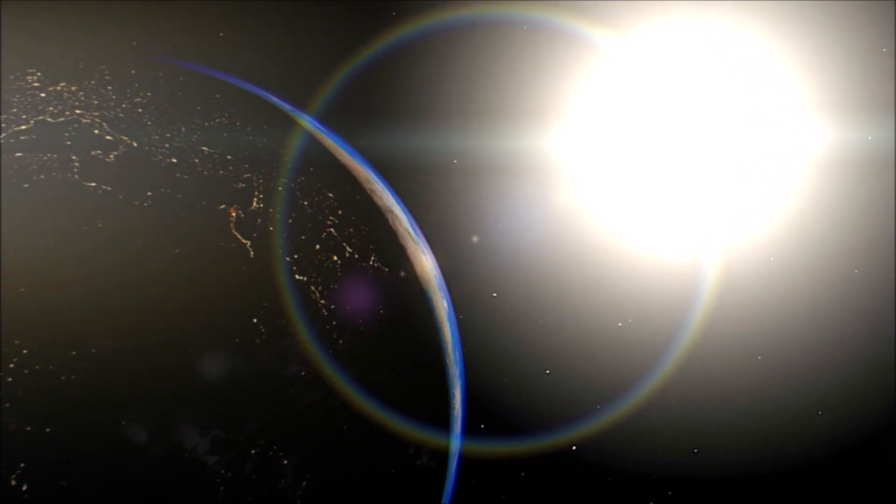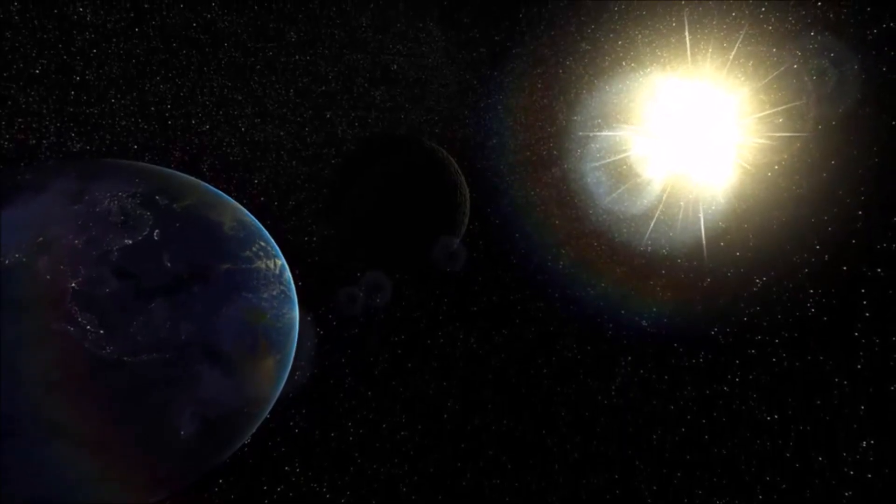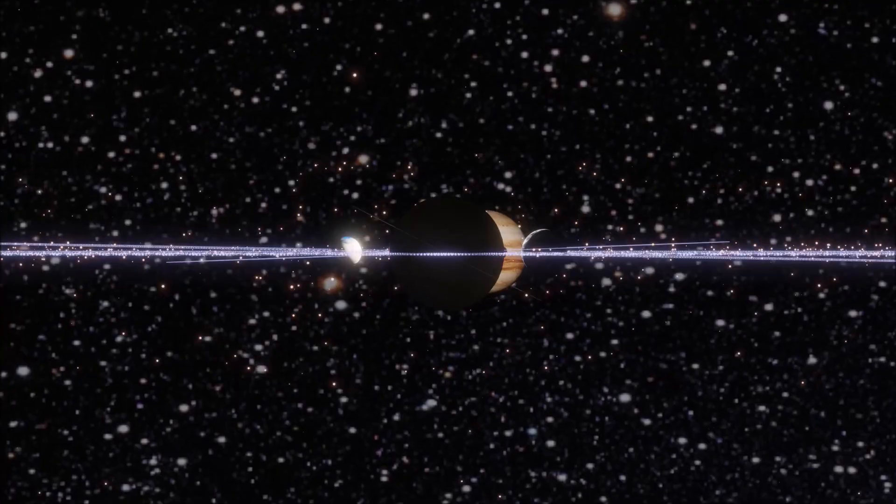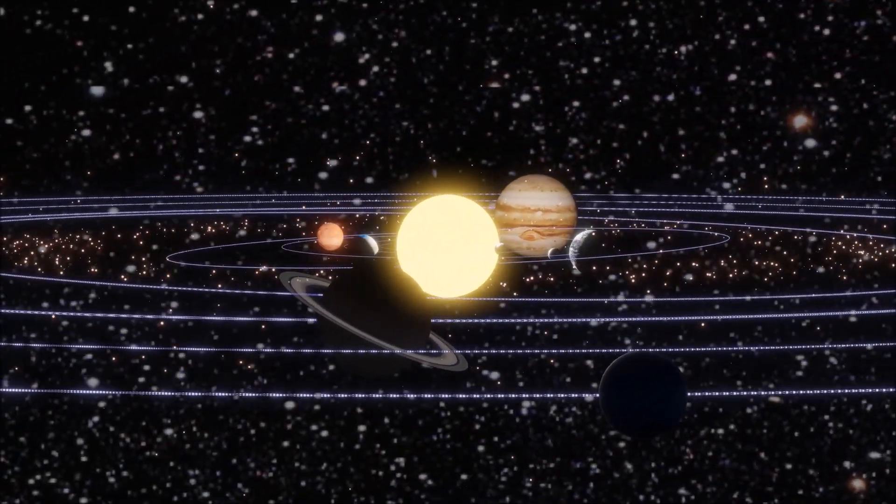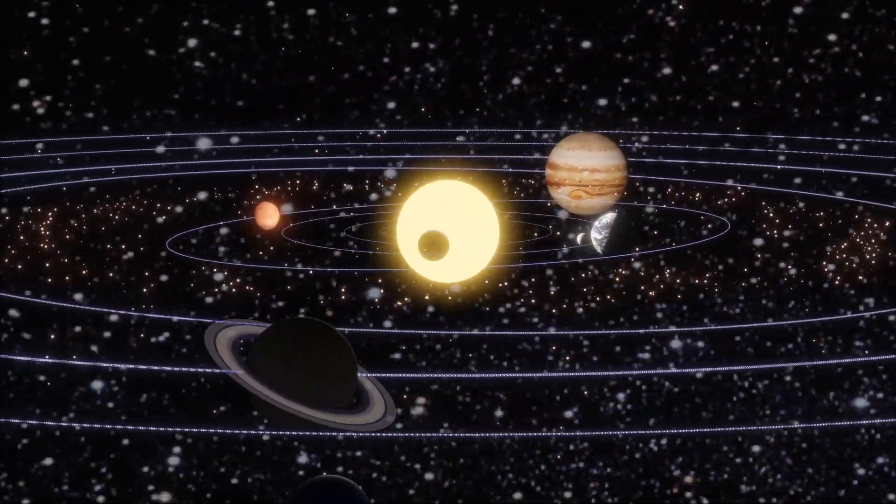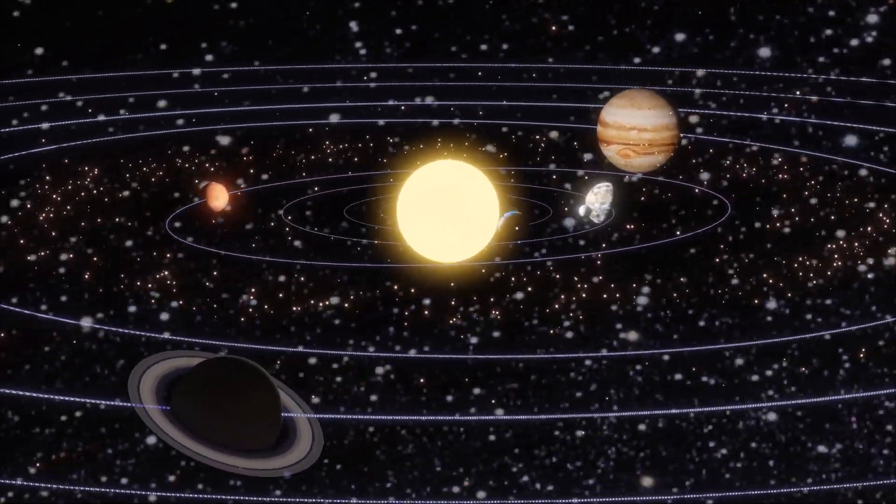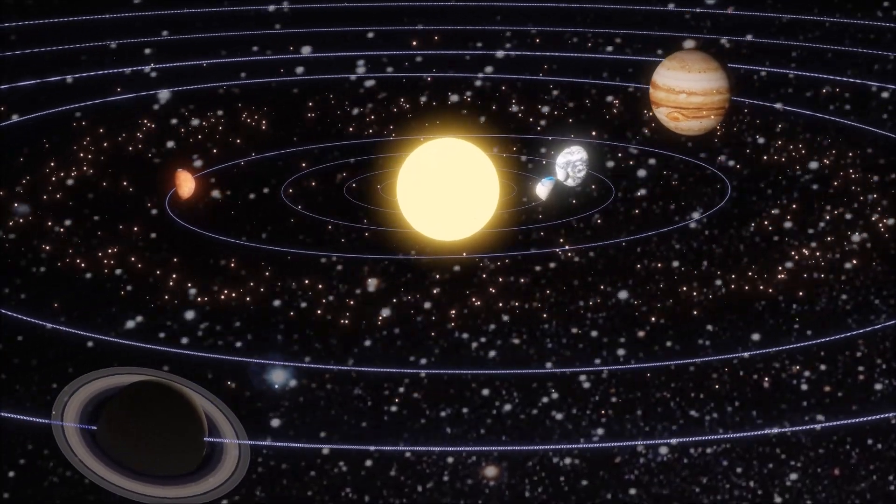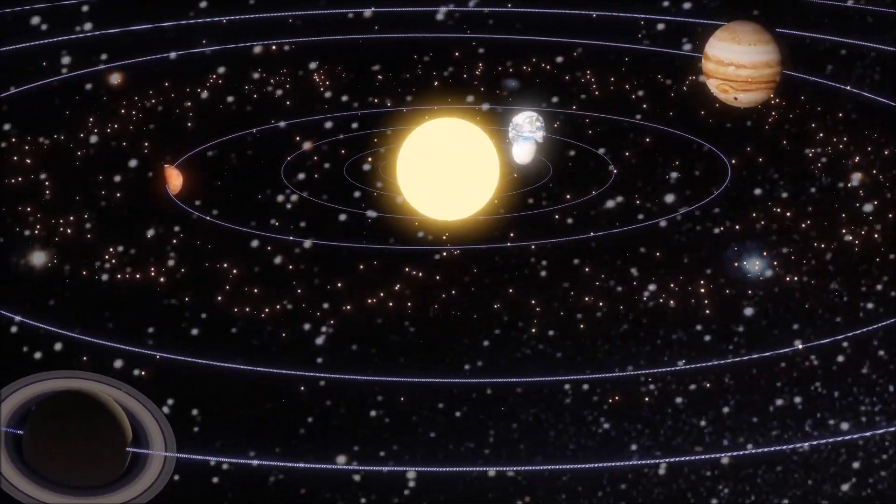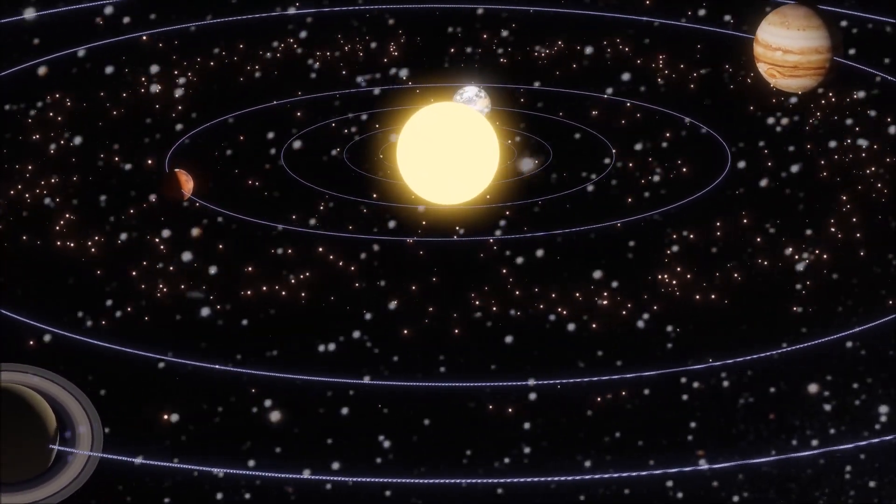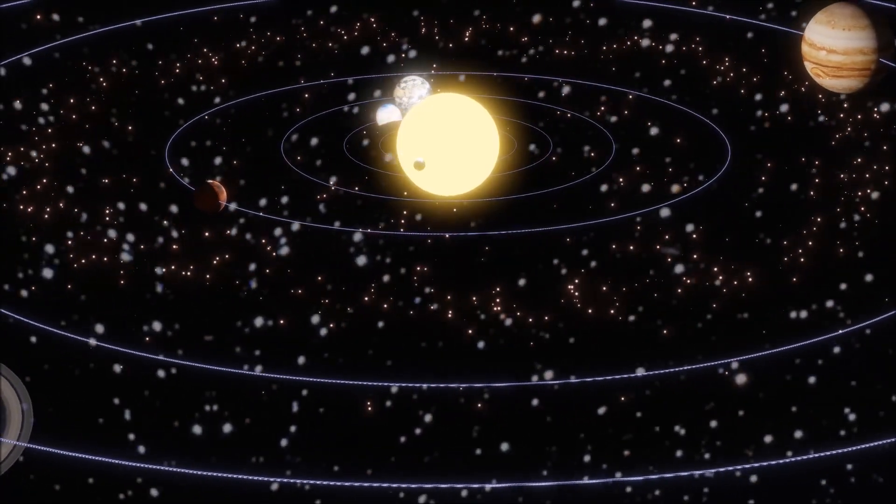The Sun is visible from all parts of Earth except for the polar regions during winter. The Sun's size and position in the solar system help stabilize the orbits of the planets. The Sun's energy is the source of all life on Earth and is responsible for weather patterns and climate on Earth.